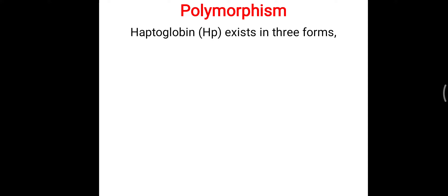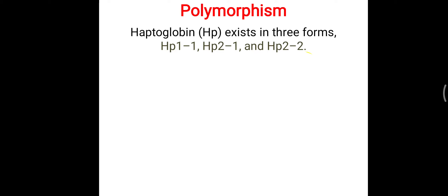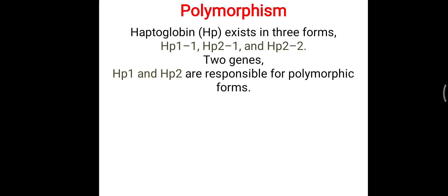Taking haptoglobin as an example: haptoglobin is responsible for transportation of hemoglobin in the blood. Haptoglobin exists in three different forms — haptoglobin 1-1, haptoglobin 2-1, and haptoglobin 2-2. These three forms are produced with the help of two different genes: HP1 and HP2.